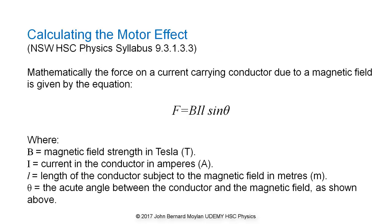Calculating the motor effect. Mathematically, the force on a current carrying conductor due to a magnetic field is given by the equation F = BIL sin theta, where B is the magnetic field strength in Tesla, I is the current in the conductor in amps, L is the length of the conductor subject to the magnetic field in meters, and theta is the acute angle between the current direction and the direction of the magnetic field.